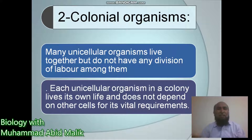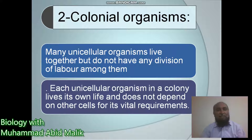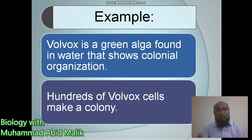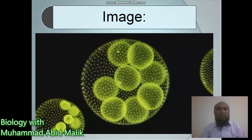Colonial organisms show colonial organization, where unicellular organisms live together but spend their lives independently. There is no proper division of labor among them. Each unicellular organism in a colony lives its own life and does not depend on others for its vital requirements. For example, Volvox is a green algae found in water that shows colonial organization — hundreds of Volvox cells make a colony.